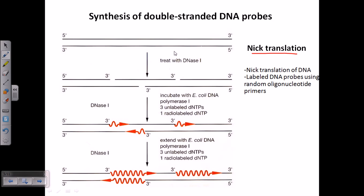In the nick translation process, we start with the DNA and treat it with DNase I, which is an endonuclease that cleaves the DNA in different segments, as you can see in this picture. After that, we incubate this fragmented DNA with E. coli DNA polymerase I, which has the capability of extending the 3' end. When it gets a 3' hydroxyl group and is provided with dNTPs, it can elongate from there.